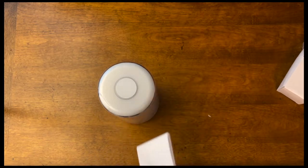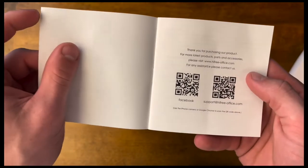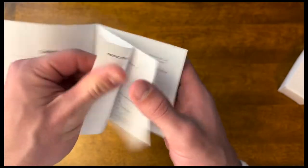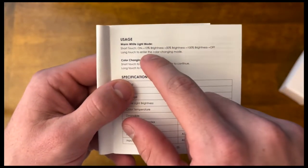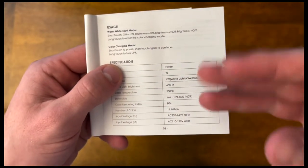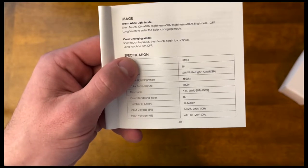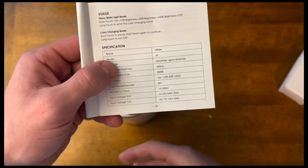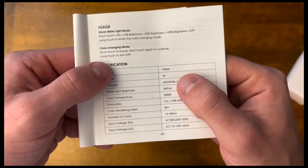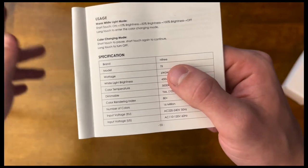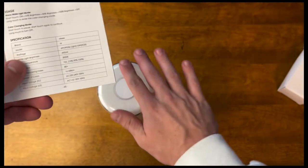I'm going to go ahead and read the instruction manual and see if there's a way to change the colors or anything like that just by tapping the top. So right away I see it says a short touch is on at 10% brightness, then it goes to 50%, then 100%, then off. So there's three different lighting modes. A long touch will enter the color changing mode. To stop the color changing, if you want to stop it on like blue or red or something like that, all you have to do is short touch to pause it. If you short touch it again, it'll continue. A long touch will just turn it completely off.